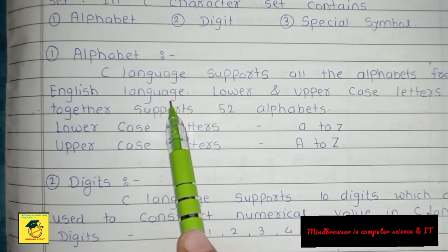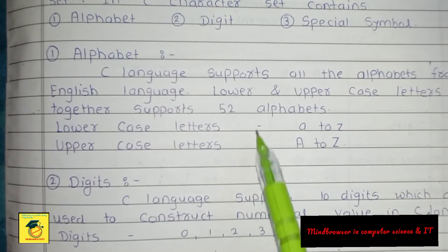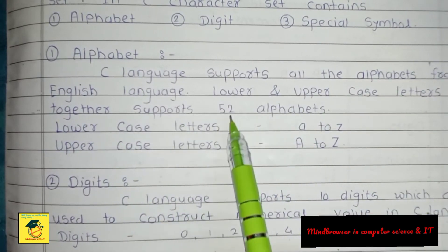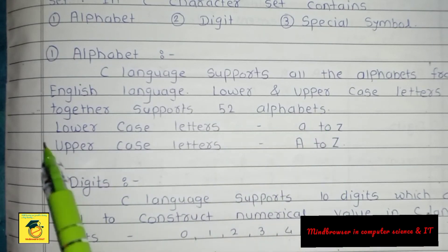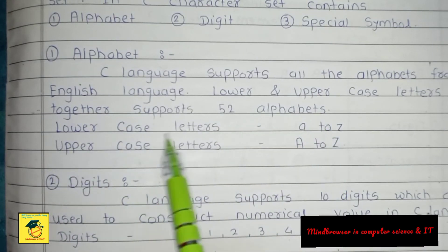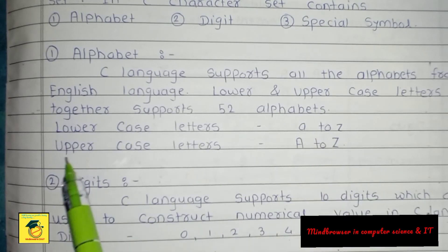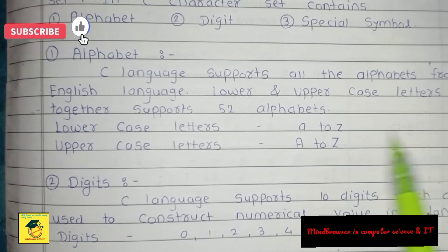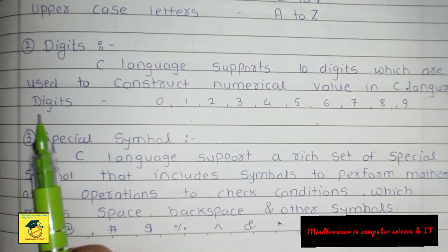First is alphabet — C language supports all the alphabets from English language. Lower and uppercase letters together support 52 alphabets. Lowercase letters means small a to z, and uppercase letters means capital A to Z.